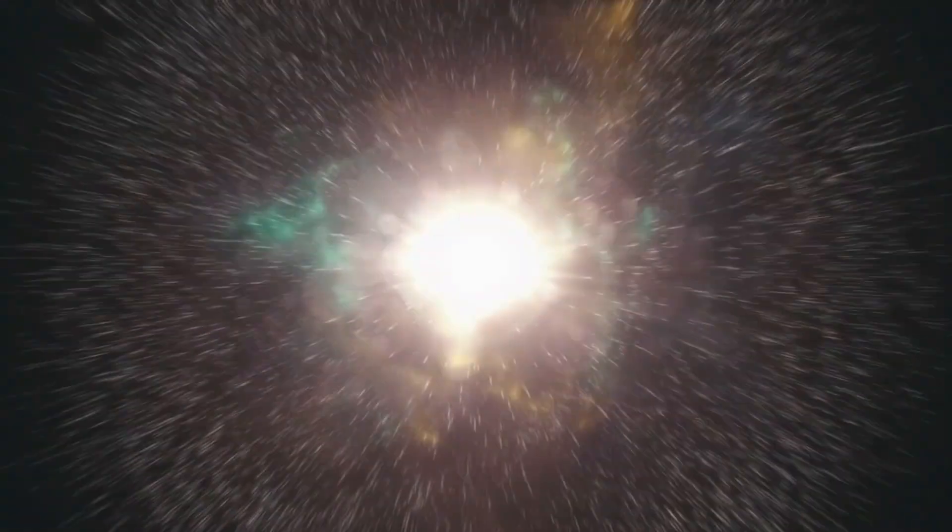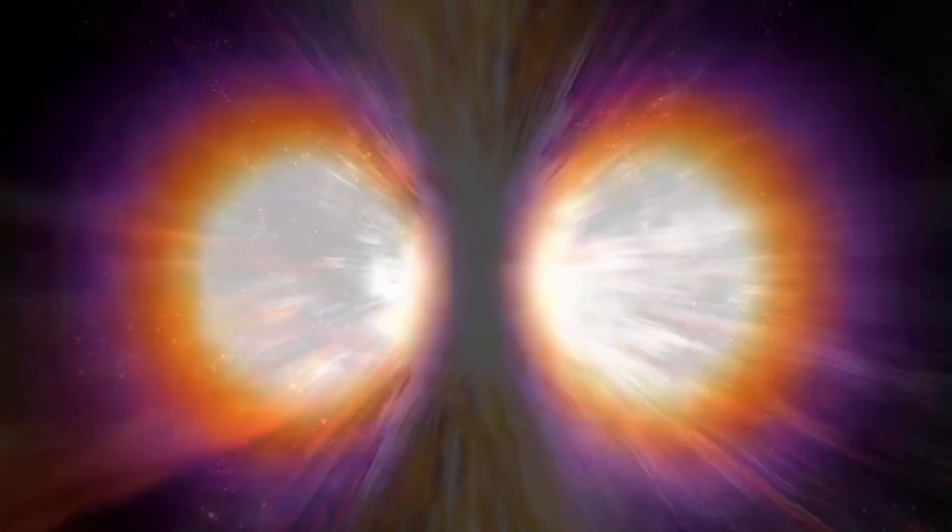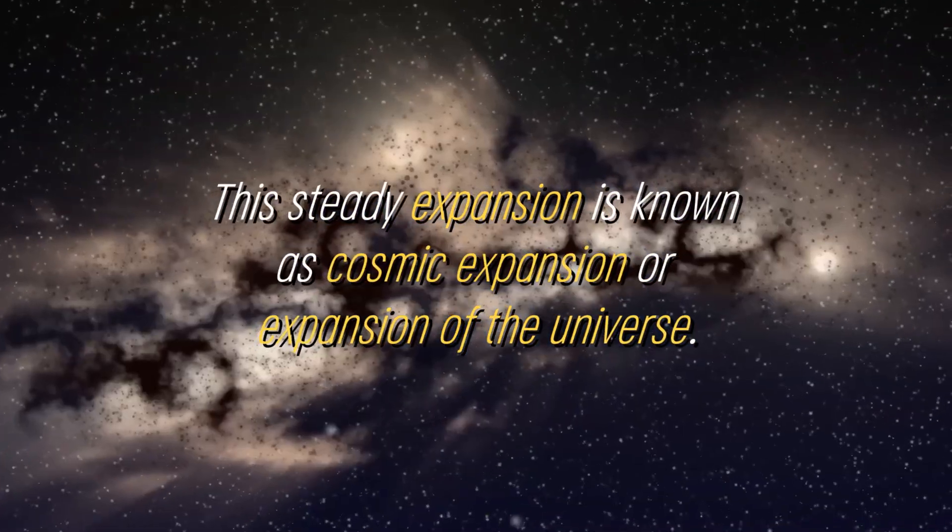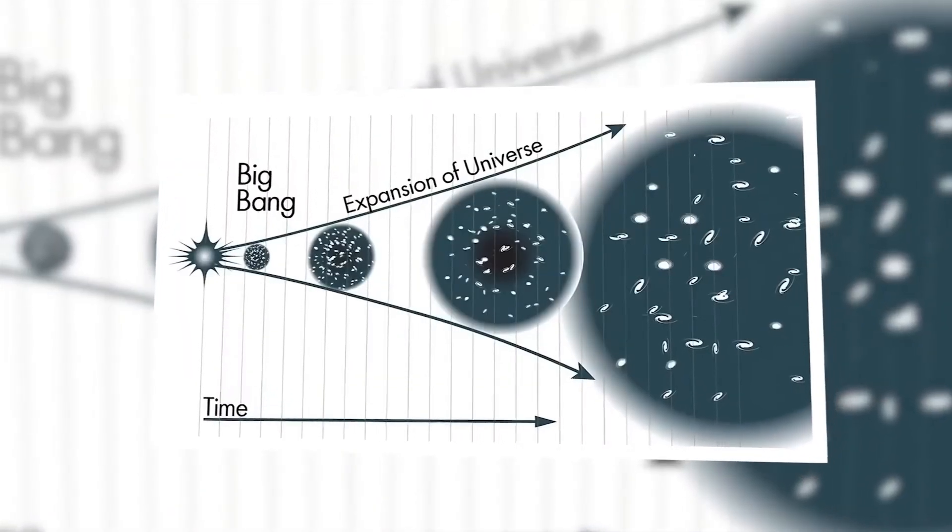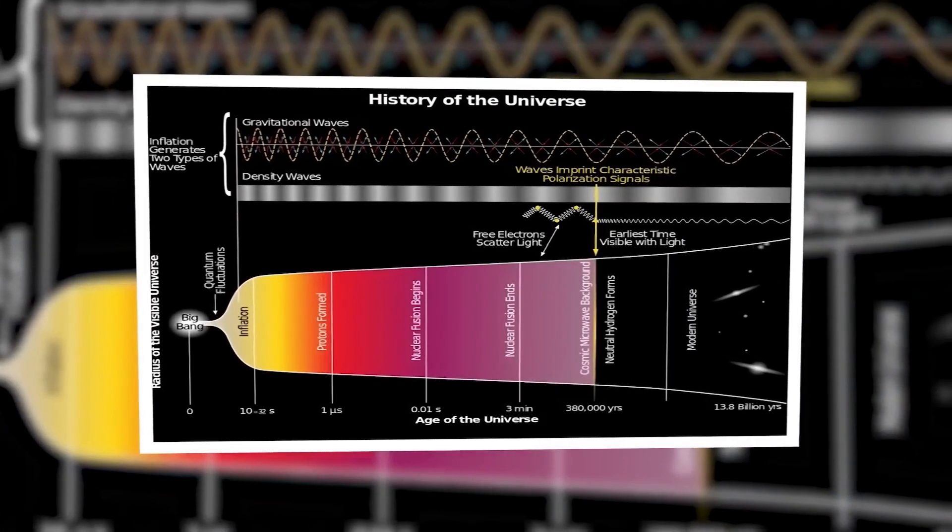As the universe continued to expand, the rate of expansion gradually slowed. It is important to note that although there was rapid cosmic inflation in the initial period, the universe continued to expand at a measurable rate. This steady expansion is known as cosmic expansion, or expansion of the universe. Scientists have observed the effects of this expansion through various observations, such as the redshift of light from distant galaxies.